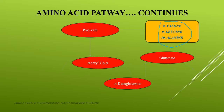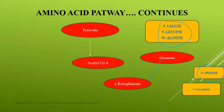In the TCA cycle, the first step involves alpha-ketoglutarate. From alpha-ketoglutarate, it is converted to glutamate, and from glutamate the next amino acid biosynthesized is proline. From glutamate, glutamine is also obtained. So from alpha-ketoglutarate, we get glutamate, and from glutamate we get proline and glutamine.